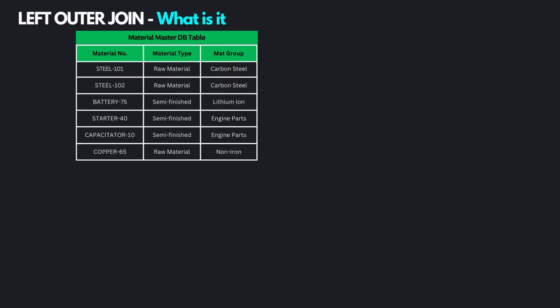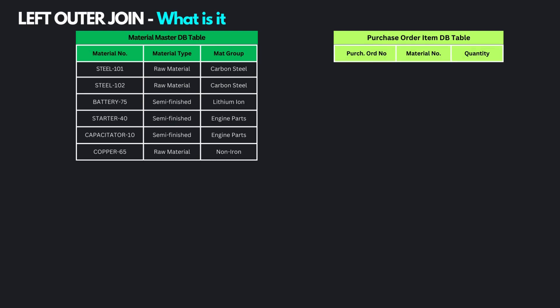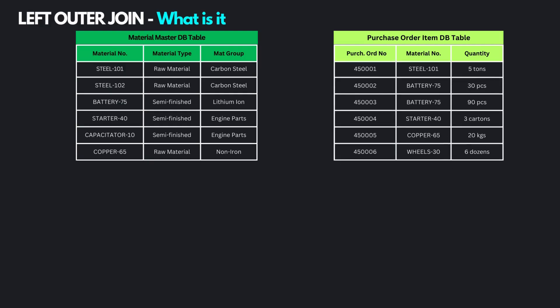Now consider another table storing the purchase order information. This table would have the columns purchase order number, material number and quantity. As an example, in purchase order number 450001, the material Steel 101 was ordered with a quantity of 5 tons.